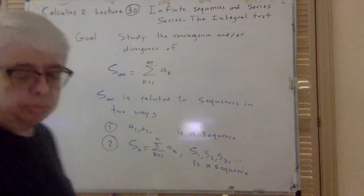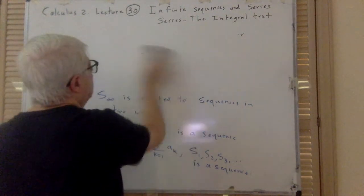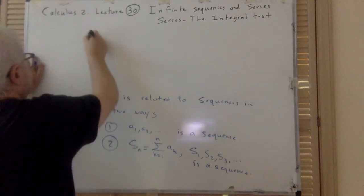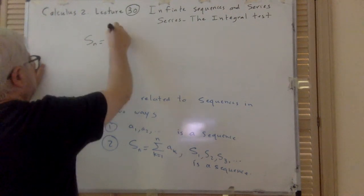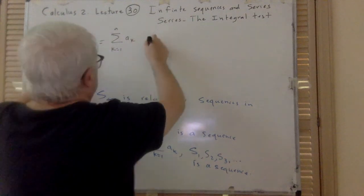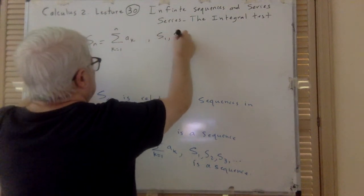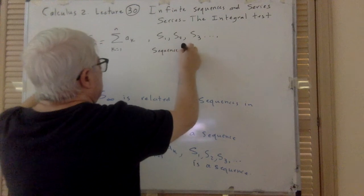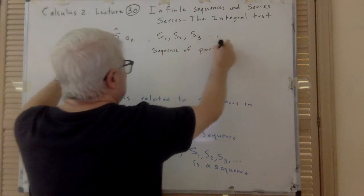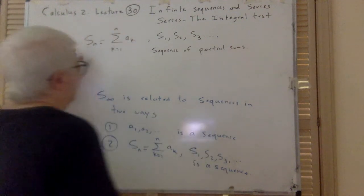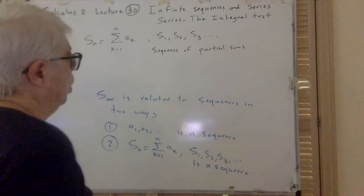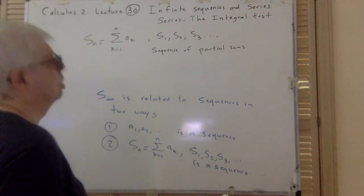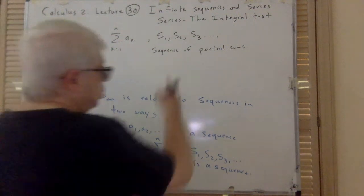So S_n equals sigma from k=1 to n of a_k, and the sequence S₁, S₂, S₃, ... is called the sequence of partial sums. Convergence or divergence of a series is, in fact, studying convergence or divergence of this sequence of partial sums.